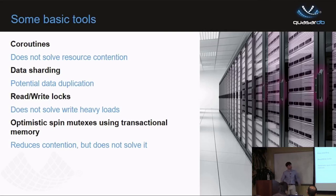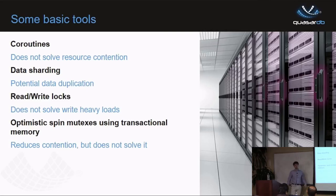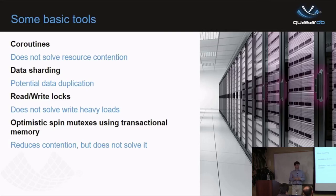So a single thread handles the connection from beginning to end — data ingestion, processing, and response. The design is basically that the database is sharded by thread. When you instantiate the database, you decide how many worker threads you have, and each thread has responsibility for everything from beginning to end. That gives very good performance. This approach only works if the per-request processing is short enough. If we had much more expensive analytics, we'd need to switch to a different strategy.